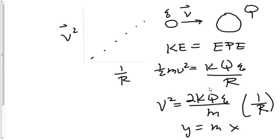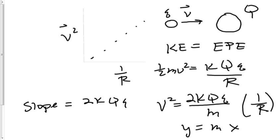And what should the slope equal? Well, the slope will be everything in front of this 1 over r. So it's going to equal 2K times big Q times little q, divided by m. And k is going to be Coulomb's constant, 9 times 10 to the 9th.